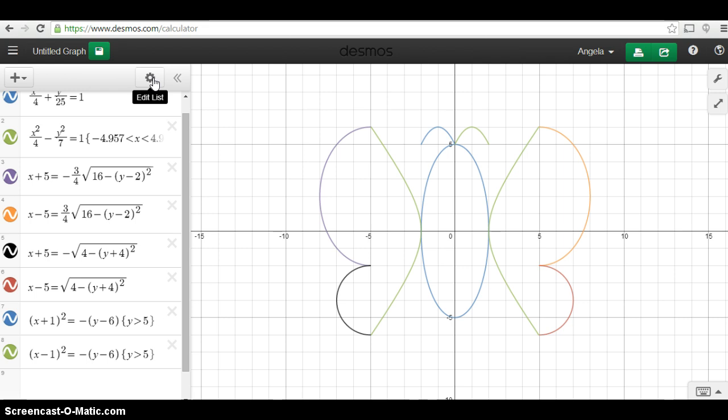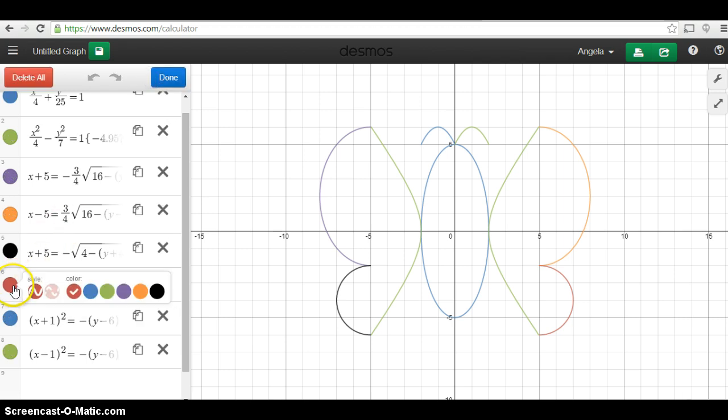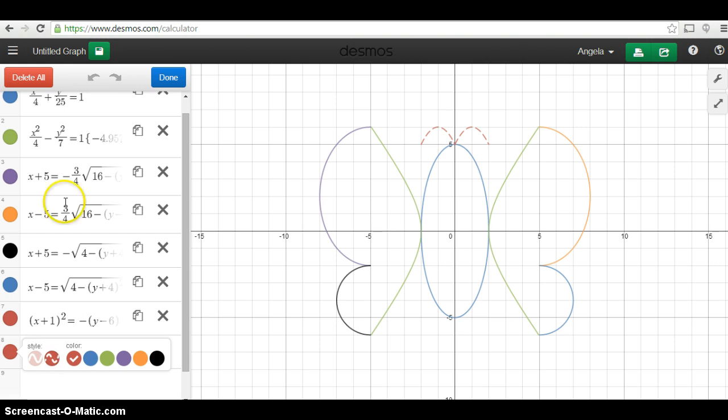Now, if you click edit list, you can actually change the colors and the styles of your graphs. So, say for example, I want my wings to be blue. And my antennae to be red. You can also change it into broken lines.